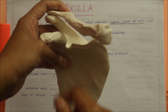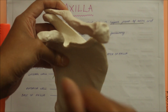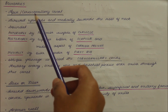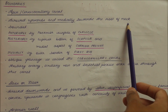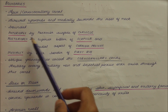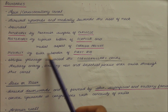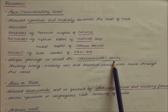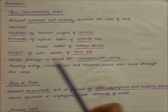The axillary artery, axillary vein, and brachial plexus enter through this cervico-axillary canal. To note the important points: the apex is directed upwards and medially towards the root of the neck, bounded anteriorly by the posterior surface of the clavicle, posteriorly by the superior border of the scapula and the medial aspect of the coracoid process, and medially by the outer border of the first rib.